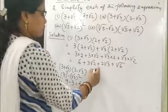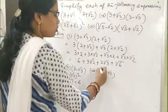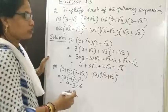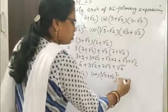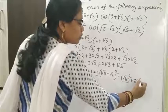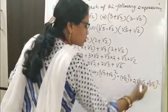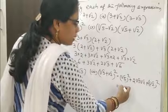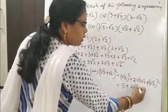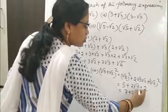Bit 3: (√5 + √2)². We apply the algebraic identity (A + B)² = A² + 2AB + B². This equals (√5)² + 2×√5×√2 + (√2)² = 5 + 2√10 + 2. So this is equal to 7 + 2√10.